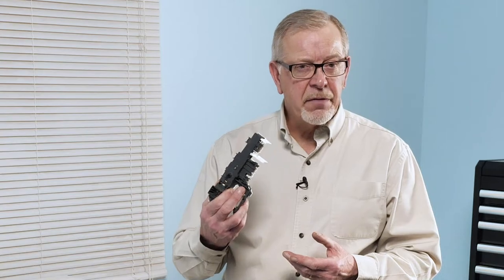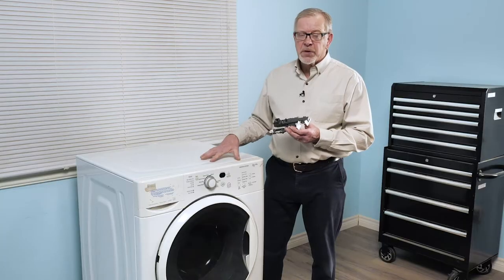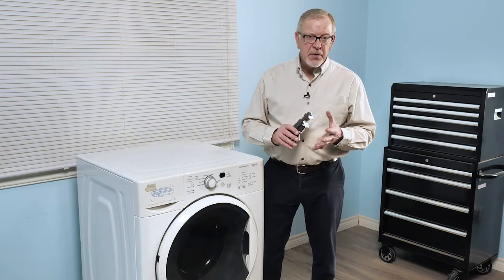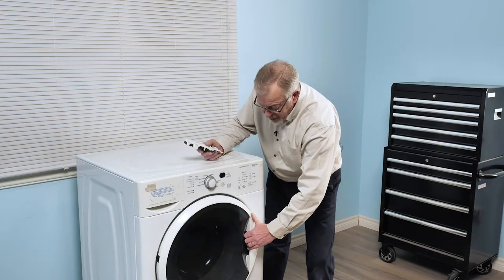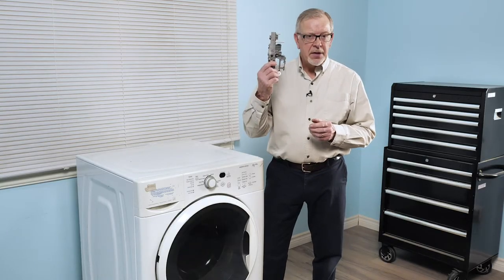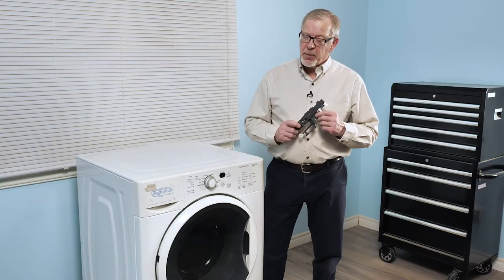If this component fails, the control board will sense that and will not allow the washer to go into a spin cycle. First of all, verify that the door will not open during the cycle. If it does, you can safely assume that the door lock assembly is the problem.